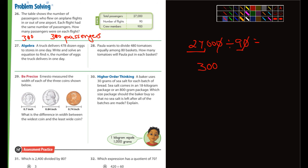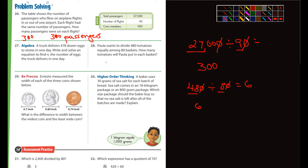Number 28: Paula wants to divide 480 tomatoes equally among 80 baskets. How many tomatoes will she put in each basket? 48 divided by 8 — if you know your times tables, 6 times 8 is 48, so that's 6. Cancel a zero on each side; no zeros remaining. The answer is simply 6 tomatoes in each basket. Alright, that's it — see you guys tomorrow!